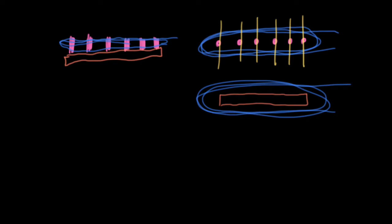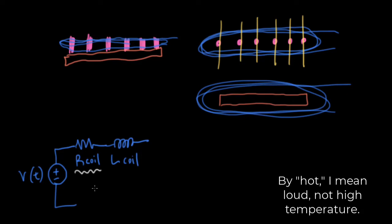I'm going to imagine that there's a voltage that's induced on the coil, and I'm going to indicate that by a function V of T. And I'm going to put in series with it an R coil that represents the resistance of the coil, and an L coil that represents the inductance of the coil.